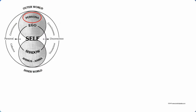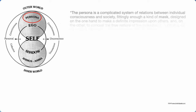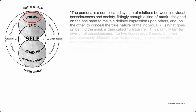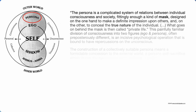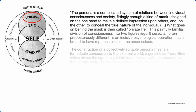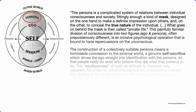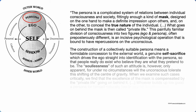Persona comes from the Greek word for masks that actors used to wear. In this case, your persona is the behavior you adopt around others to interact with the outer world. Jung says the persona is a complicated system of relations between individual consciousness and society — a kind of mask designed on the one hand to make a definite impression upon others and on the other to conceal the true nature of the individual. What goes on behind the mask is then called private life.